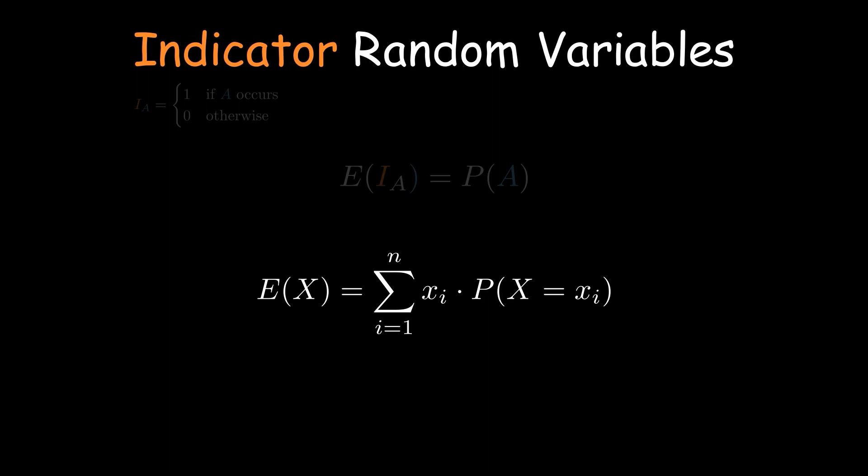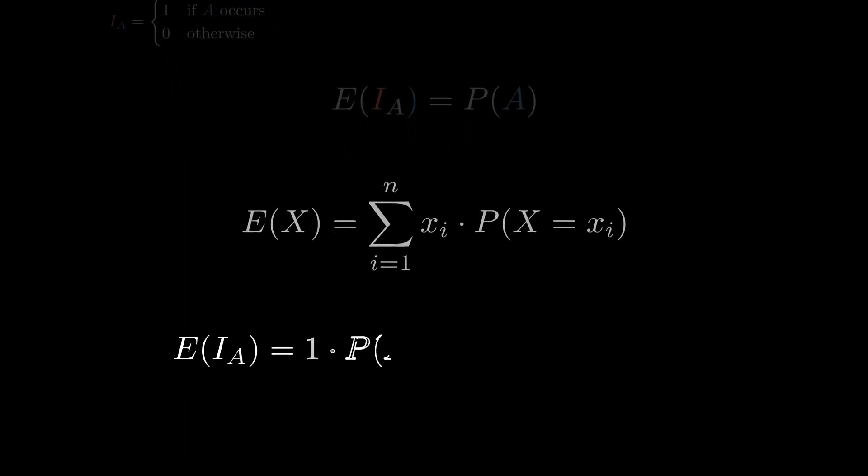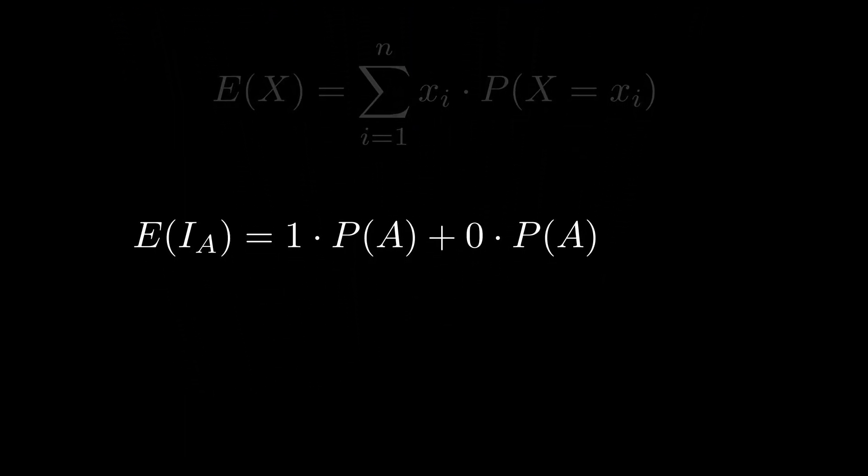Since the indicator random variable only outputs one or zero, the expected value is simply the probability of the event A.